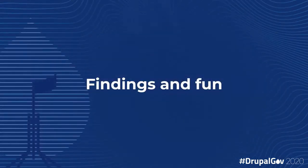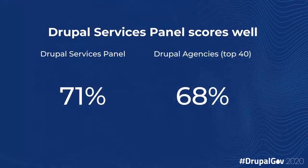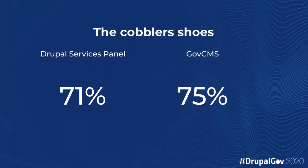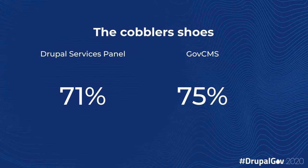Let's have a look at some of the findings and fun facts. We looked at the Drupal services panel and Drupal agencies, top 40 on the Drupal marketplace. The Drupal services panel seems to be doing pretty well, just beating out the top 40 there. It's a case of the cobbler's shoes — the people that build GovCMS sites are not even scoring as much as GovCMS sites themselves. That would say that maybe GovCMS is lifting their game, or perhaps the various agencies are just putting more flashy stuff on their homepages.